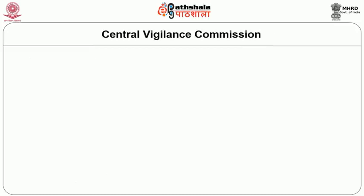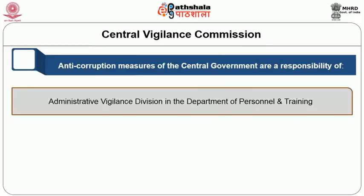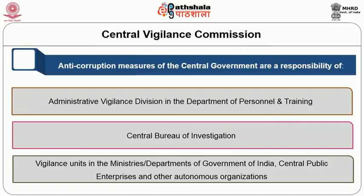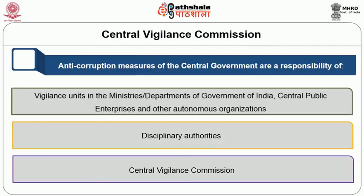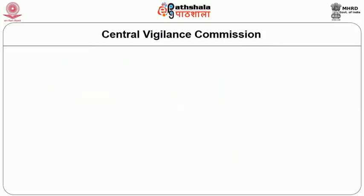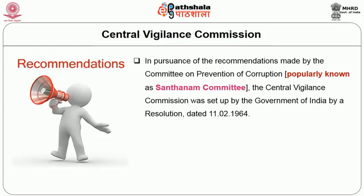We are now going to discuss the Central Vigilance Commission. Anti-corruption measures of the Central Government are the responsibility of the Administrative Vigilance Department in the Department of Personnel and Training, the Central Bureau of Investigation, Vigilance Units in the Ministries and Departments, Central Public Enterprises and other autonomous organizations, the Disciplinary Authorities, and the Central Vigilance Commission. The Administrative Vigilance Division was set up in the Ministry of Home Affairs in August 1955 to serve as a central agency for anti-corruption measures. In pursuance of the recommendations made by the Committee on Prevention of Corruption — popularly known as the Santhanam Committee — the Central Vigilance Commission was set up by the Government of India by a resolution in 1964.